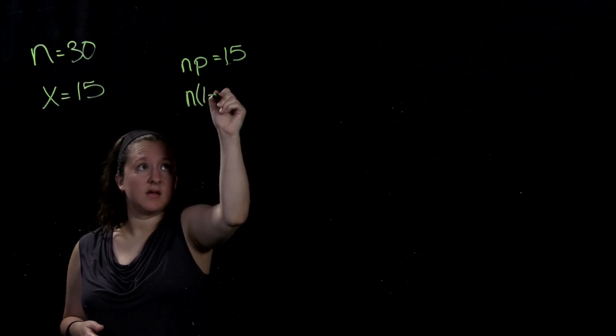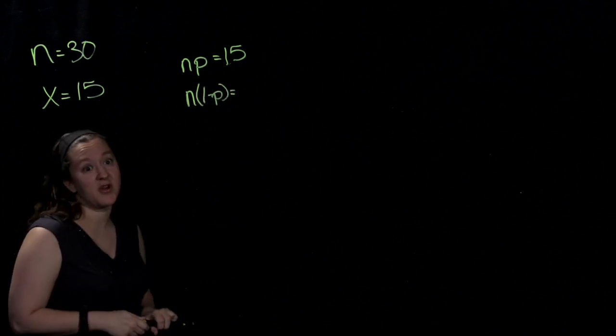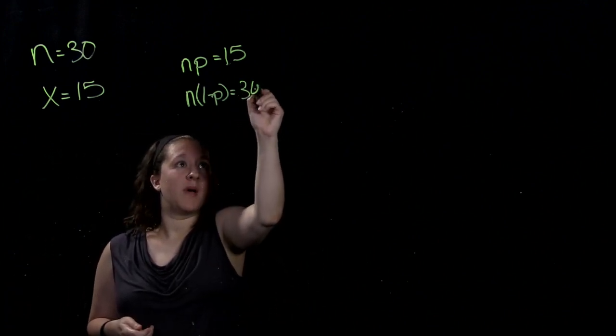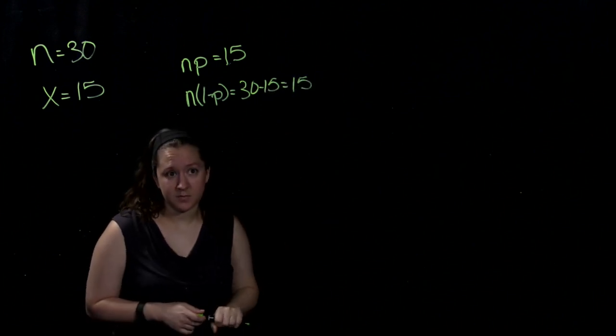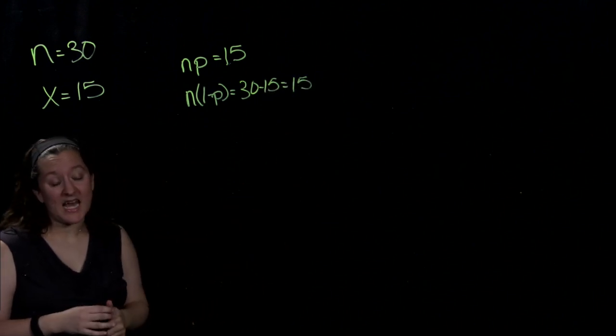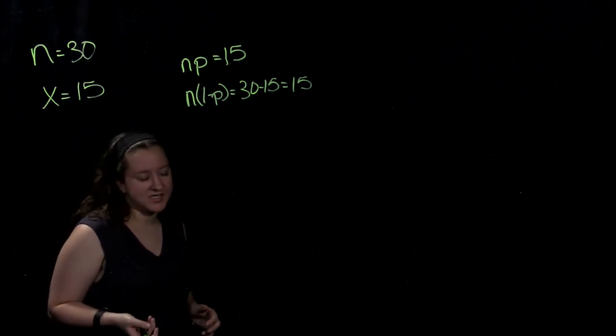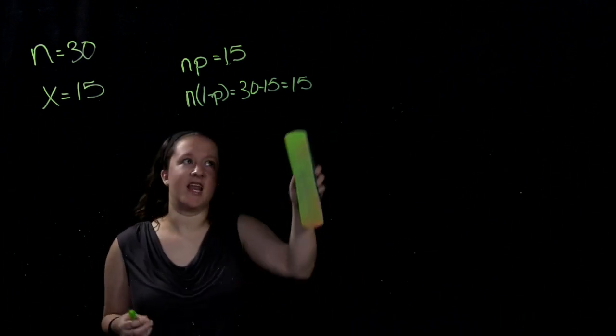And n times 1 minus p is the number of failures, or the number of students who said no, they're not currently living in Pennsylvania. In this case, 30 minus 15, which is also 15. We have at least 10 successes and at least 10 failures, so we can use the normal approximation method to construct the 95% confidence interval with these data.